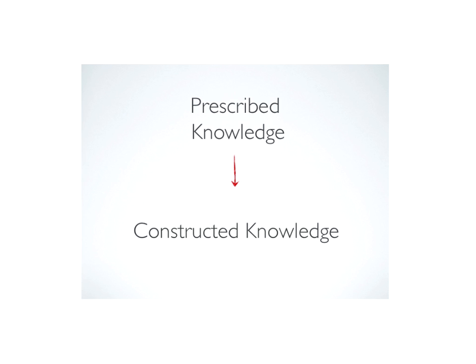One of the things we've also discussed is moving from a model of what we call prescribed knowledge, where the teacher is the sage on the stage imparting knowledge to students who are receiving it, to a model where students are constructing their own knowledge. One of the challenges of doing this is that it requires the teacher to give up control of the curriculum. By giving up control, I don't mean letting the students loose to do whatever they want, but giving them a construct and a context for what they're learning and letting them really build their own understanding in ways that are meaningful to them.